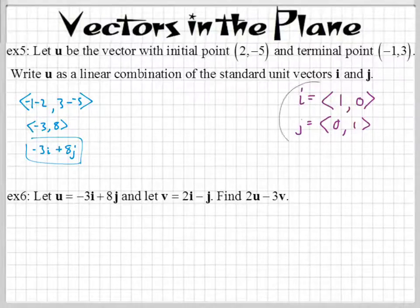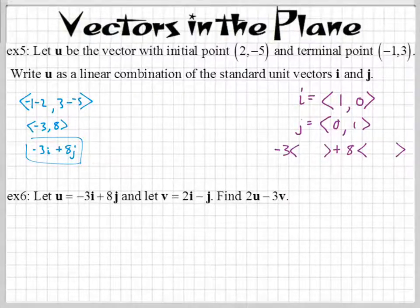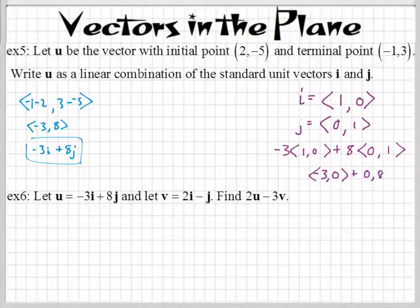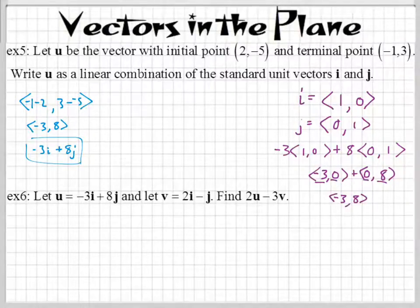It would look like this: negative 3 times i — it's a vector — and then add 8 times j. You guys know what i is? i is 1, 0. And j is 0, 1. When you distribute this, you get negative 3, 0 plus 0, 8. And then if you add these two vectors together, you add the first numbers and the second numbers together: negative 3 plus 0 is negative 3, and 0 plus 8 is 8. Boom, we get the same vector. Do you see how they're related?